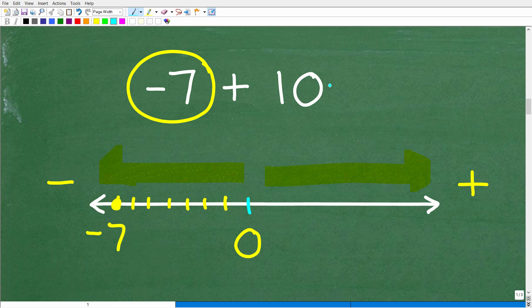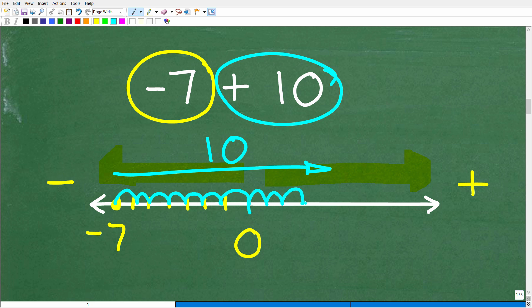Now we want to add a positive 10 to this negative 7. That means we're going to go in the positive direction 10 units. When we do that, we have 1, 2, 3, 4, 5, 6, 7, 8, 9, 10. We land at a positive 3. So -7 + 10 = 3.